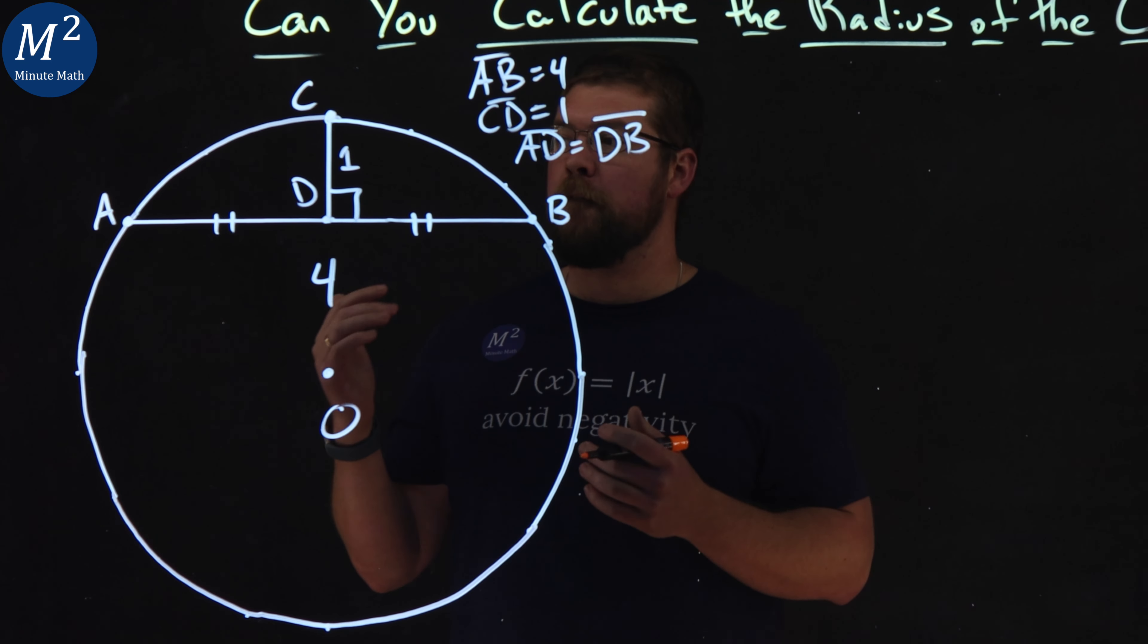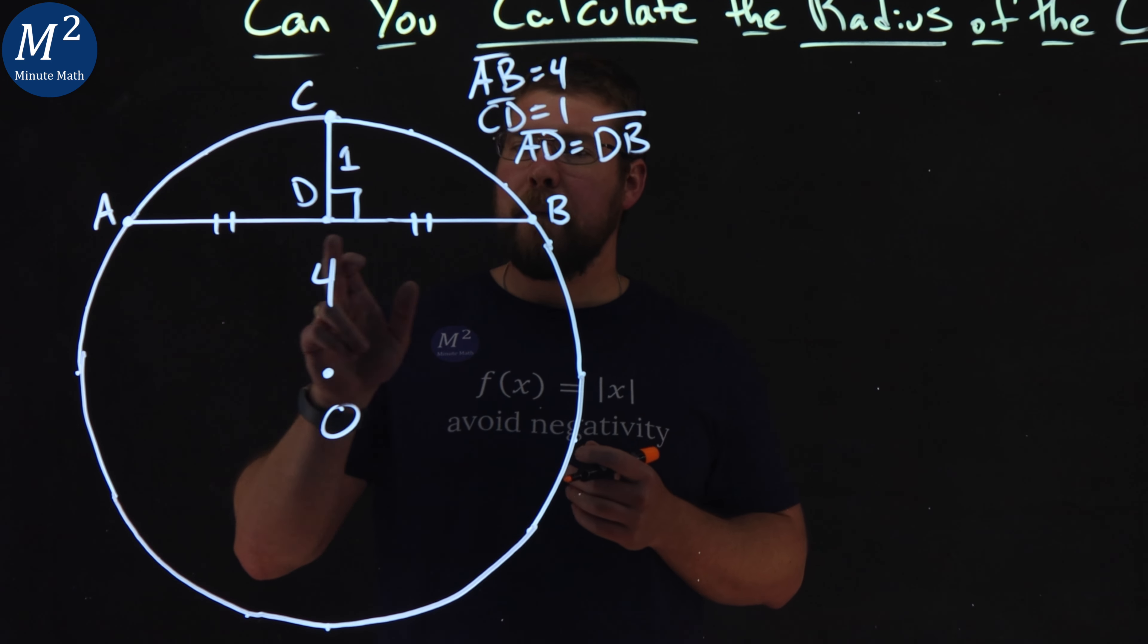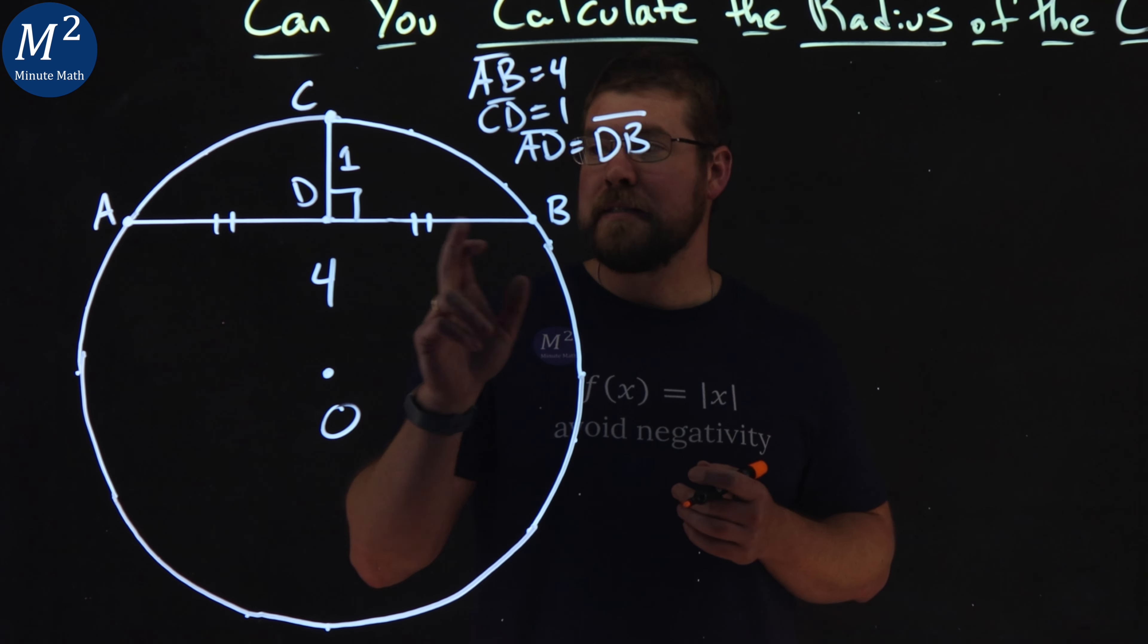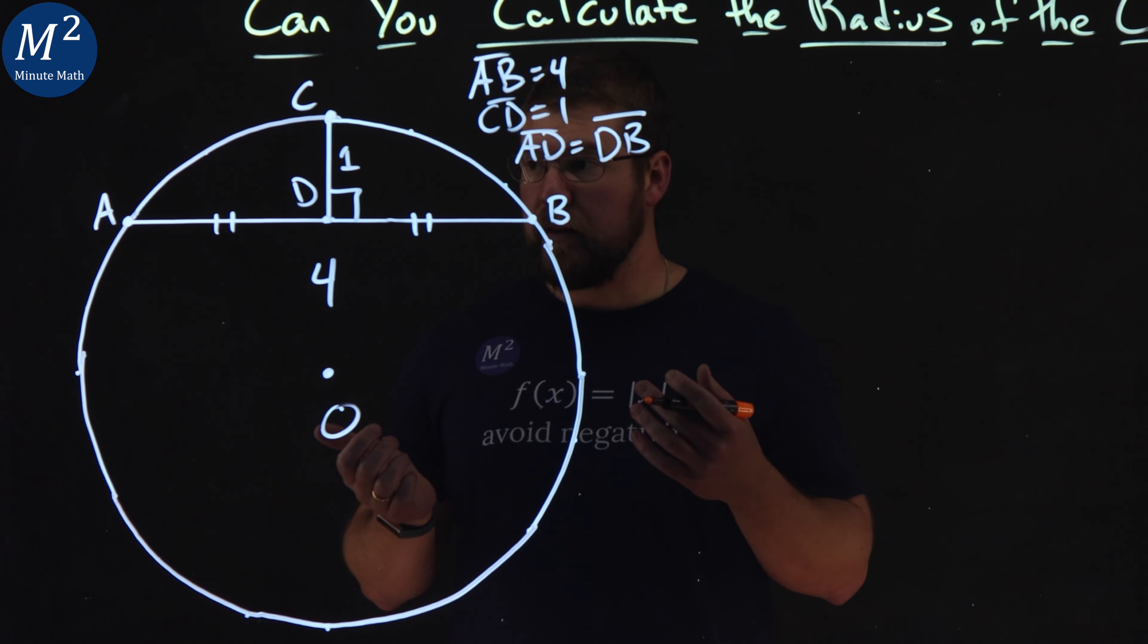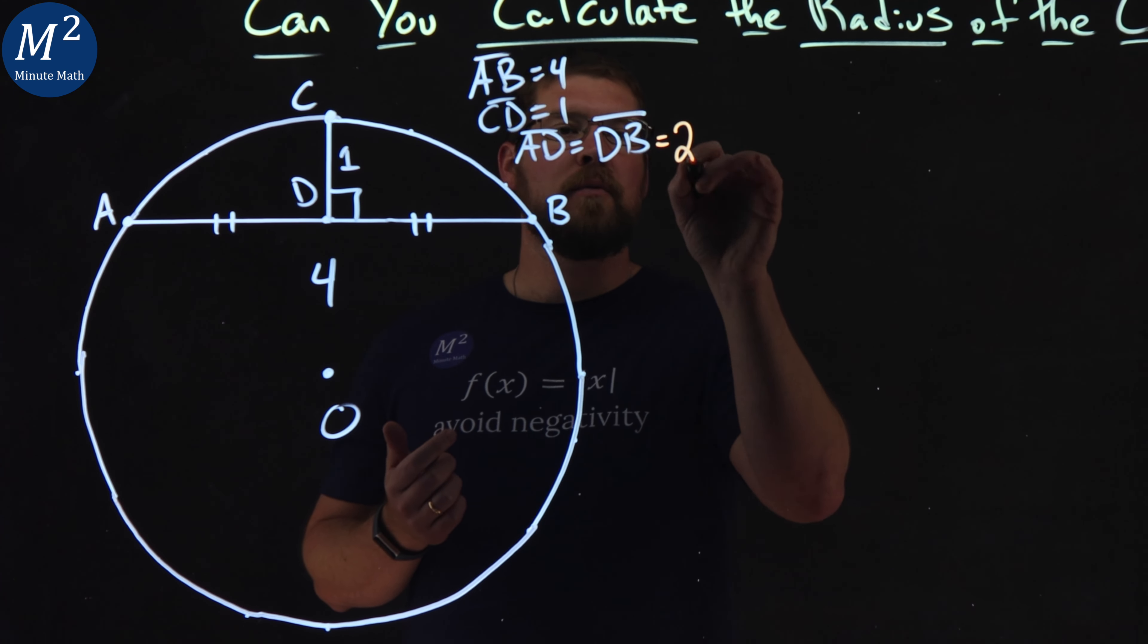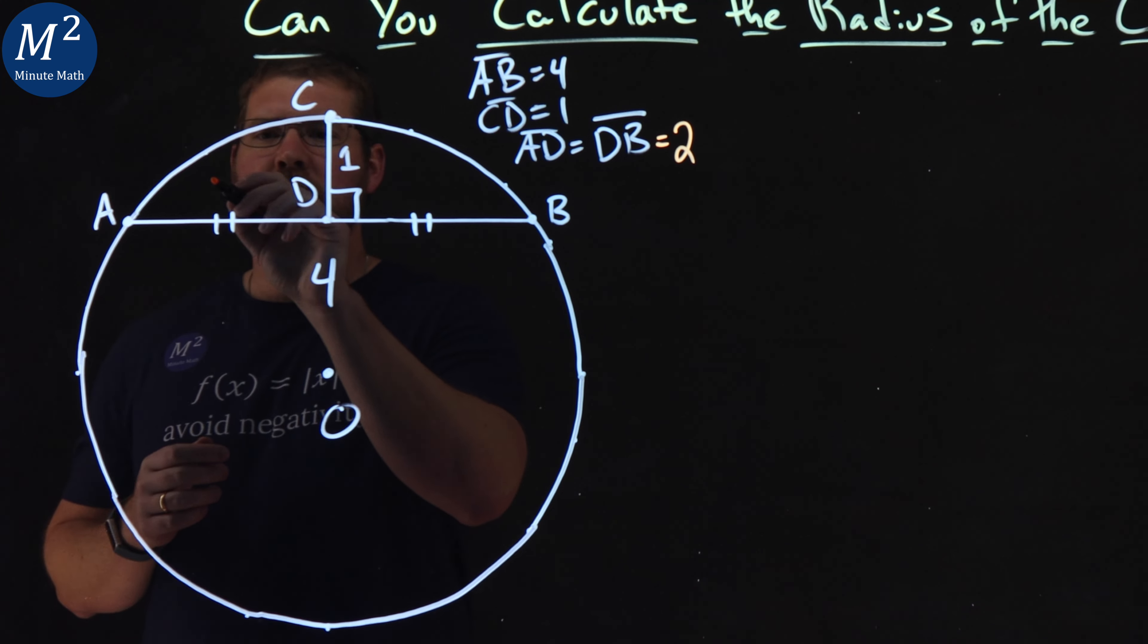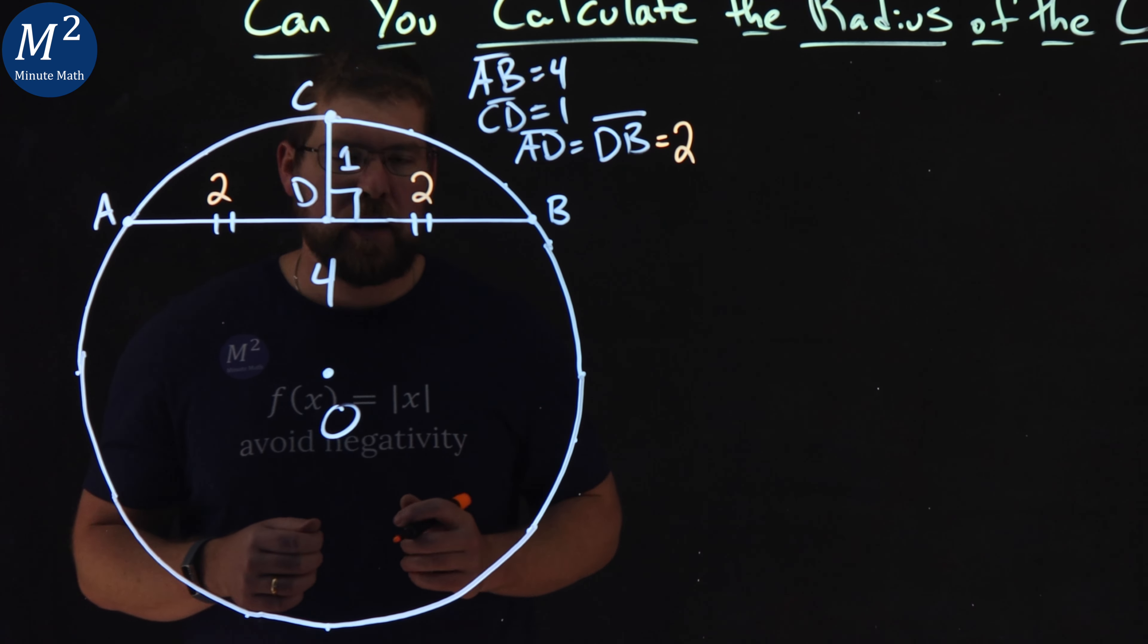What else can we extrapolate from this? AB has a length of 4. And since AD and DB are equal, that means each one of those is equal to 2, half of 4. So we've got a 2 here and a 2 here.